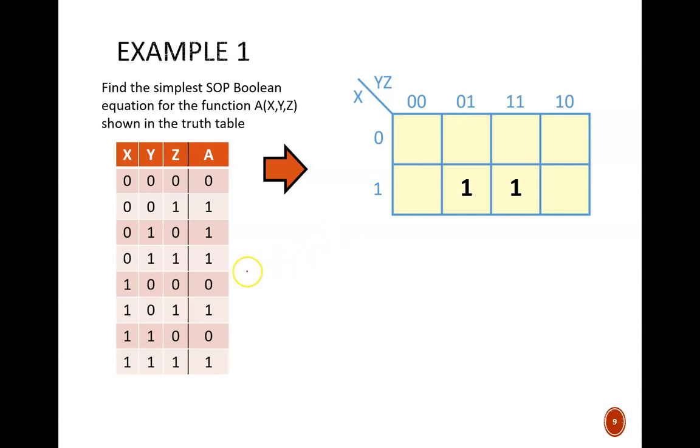In a similar fashion, we fill in the remaining 3 ones. These occur at input codes 0, 1, 1, 0, 1, 0, and 0, 0, 1. As a double check, note that there are 5 ones in the truth table output column, which matches the 5 ones now present on the K-map.